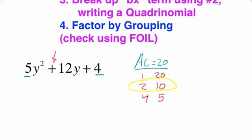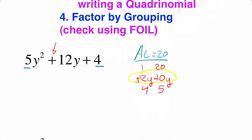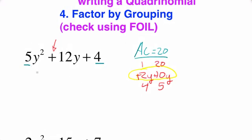I like to actually use the variable — in this case y — and use signs. So we're going to put plus 2y plus 10y. From our instructions, we're going to break up this middle term using this factor pair. So here's 5y squared plus 2y plus 10y plus 4. We have broken this 12y down into 2y plus 10y, because 2y plus 10y equals 12y. It's the same polynomial, just written as four terms.